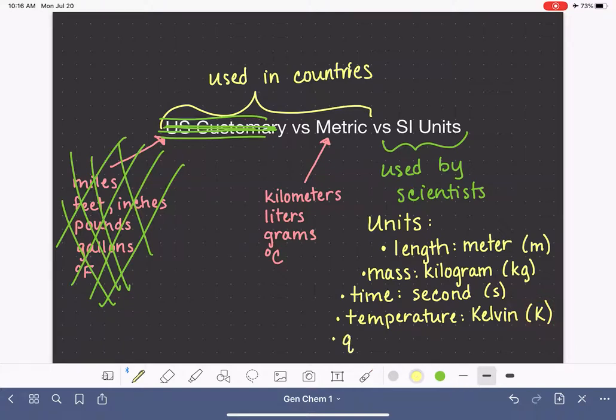And then last, the quantity, so if we're counting something, like how many cats live in my house, the unit of quantity is the mole, which is abbreviated M-O-L.